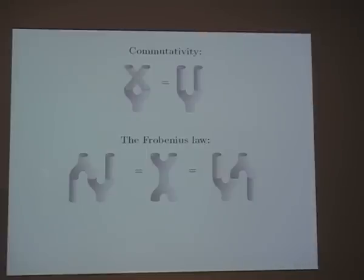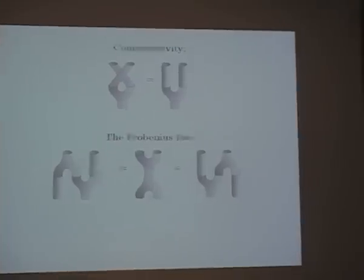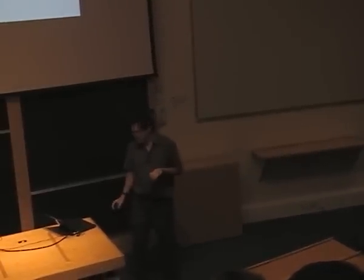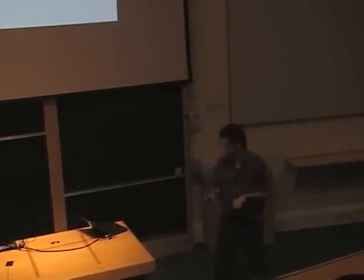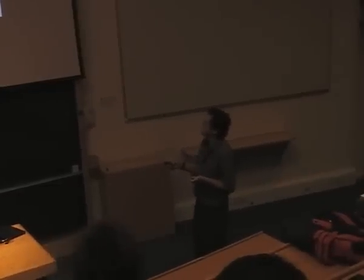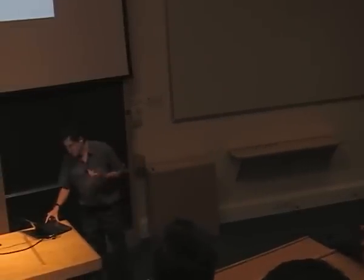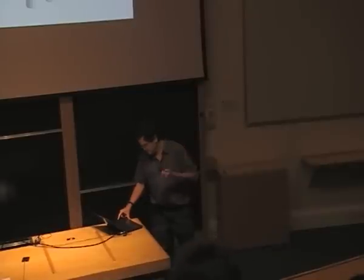Frobenius algebras have recently been important in several different ways — originally for 2D topological quantum field theories. But in quantum information theory, people have noticed that a Frobenius algebra structure on a Hilbert space is really a way of equipping it with a specific orthonormal basis — a classical structure on a quantum system. You can't correctly duplicate all states in a quantum system, but if you pick a basis you can duplicate those states, which gives you a co-multiplication. So 2D TQFTs are the same thing as classical structures on a Hilbert space.